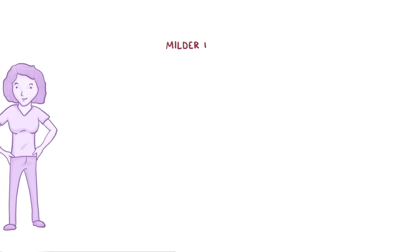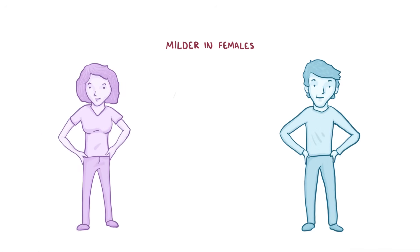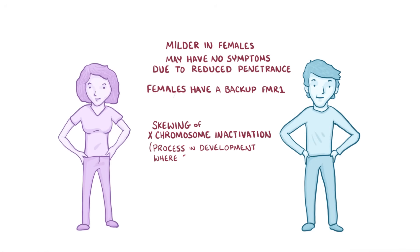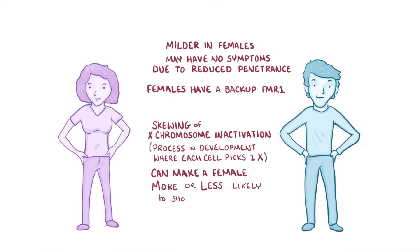Males can also have larger than normal testes after puberty. Fragile X is typically milder in females than males, and many females with the Fragile X mutation have no symptoms due to reduced penetrance. This is because females have a normal backup copy of FMR1 on their other X chromosome. Skewing of X chromosome inactivation, which is the process in development where each cell picks one X chromosome to rely on, can make a female more or less likely to show symptoms.